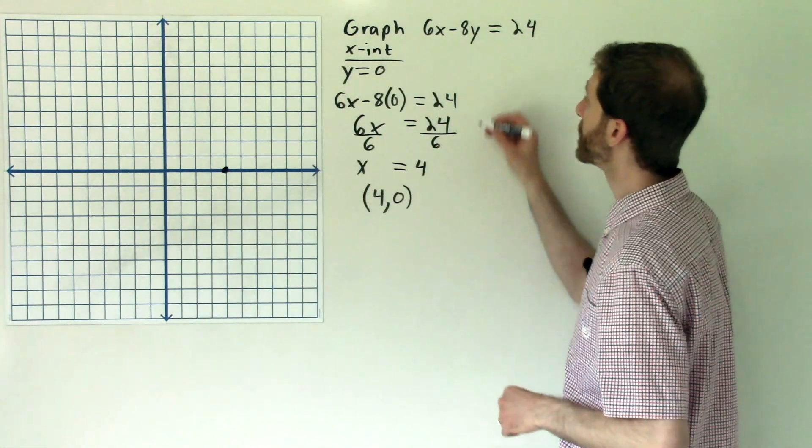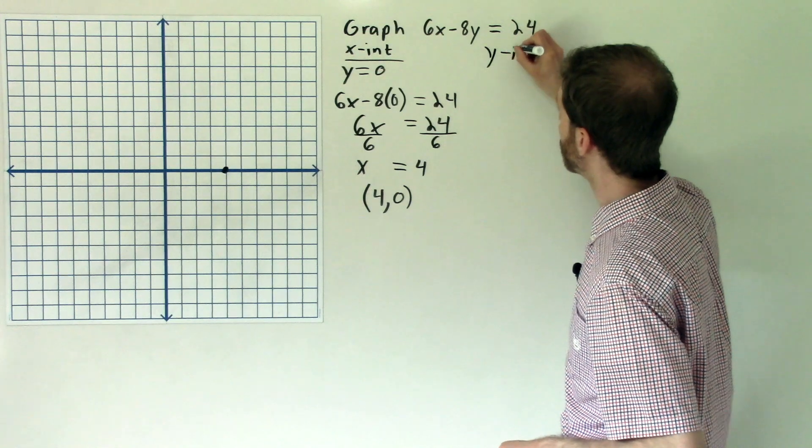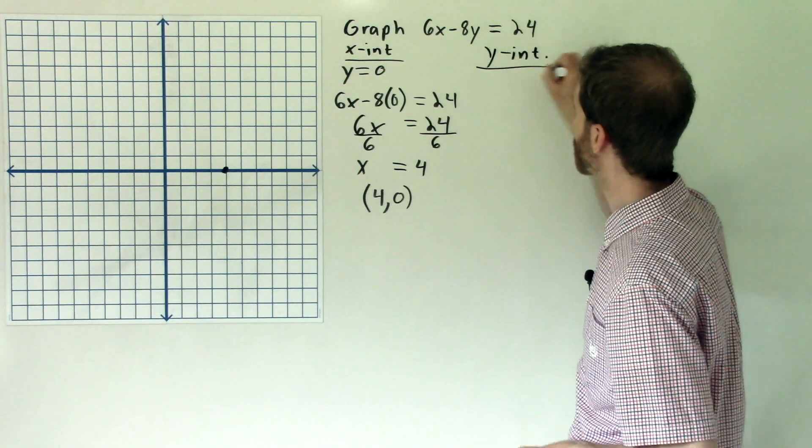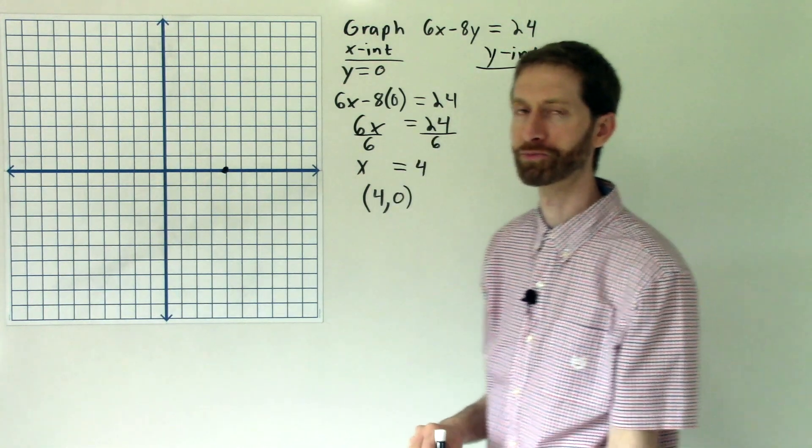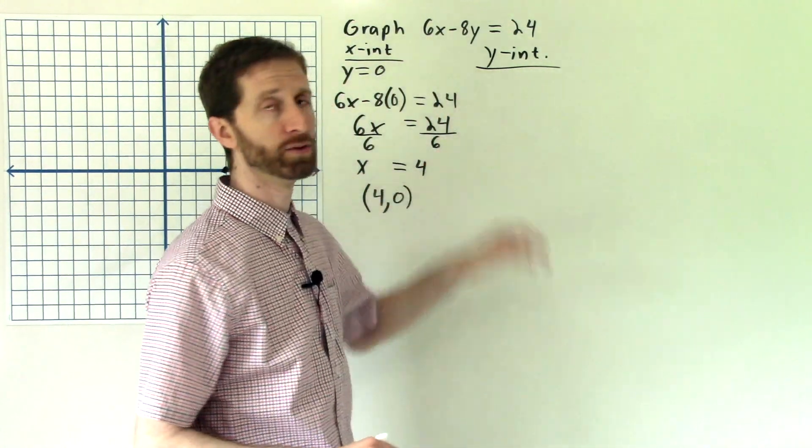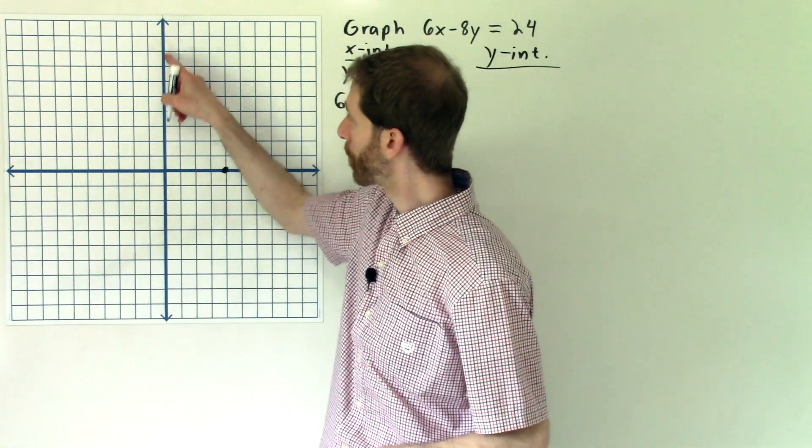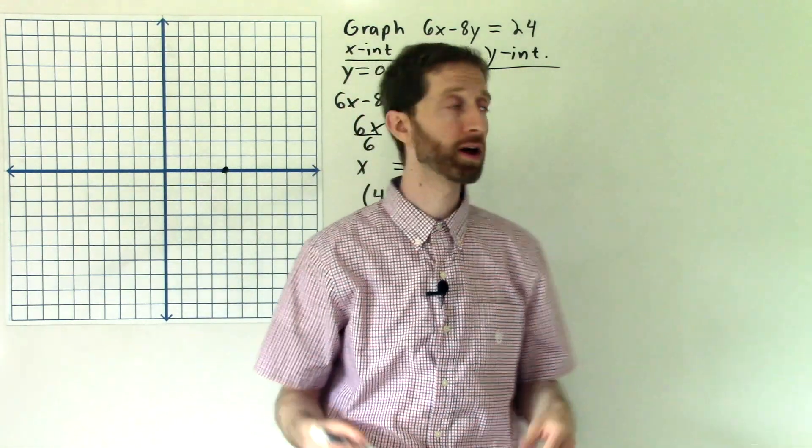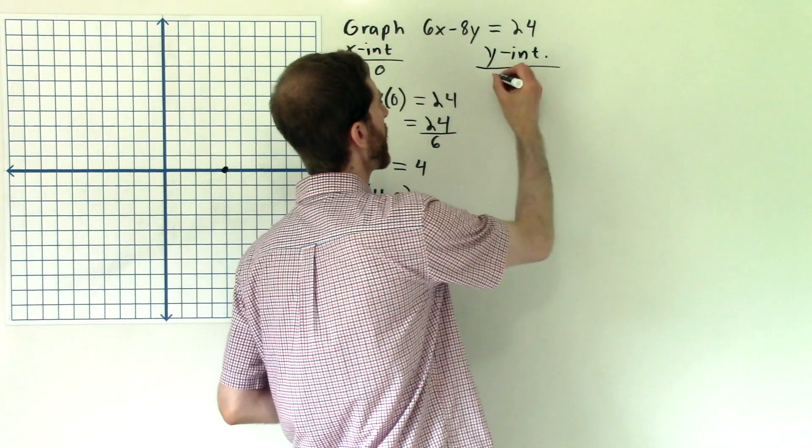All right, so now I'm going to find the y-intercept. So I'll put that up here and I'll probably flip sides so I don't go off camera. Otherwise you'll just be seeing an arm doing the work, which is kind of funny. Okay, so the y-intercept will occur when the x value is zero because we're finding where we cross this axis right here. Okay, so that's where x is equal to zero.